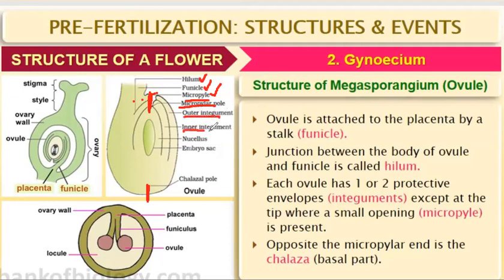There are two integuments — the coverings of the ovule. Inside is the nucellus, a mass of cells that provide reserved food to the ovule. This is the nutritious part. The main part of the ovule is where the megaspores are present — it is called the embryo sac, which is the female gametophyte. The micropylar pole is the apical end, and the chalazal pole is the opposite end.